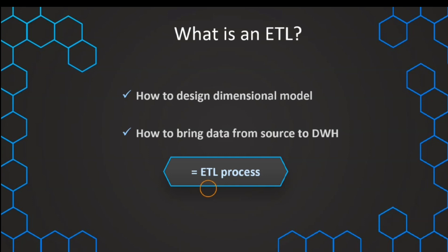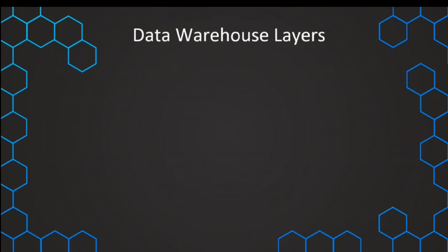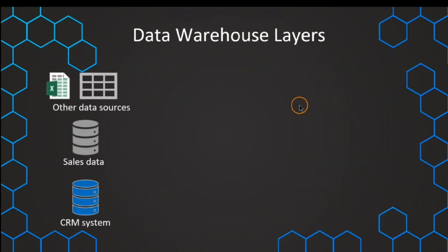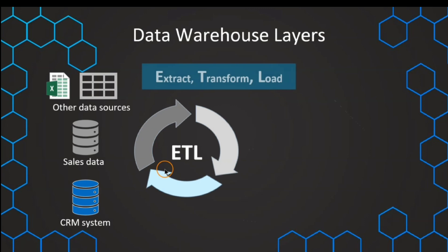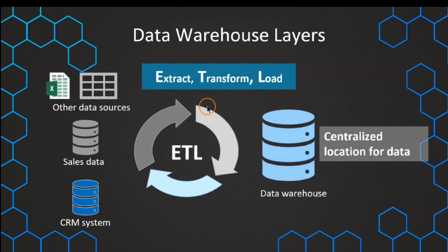Let's quickly revisit what we have already learned about the ETL process. We have learned that there are data sources, and our data for our data warehouse can come from all of these different sources — they need to be integrated, cleaned, transformed, and integrated in our data warehouse. The ETL tool handles this by extracting the data first from the data sources, then transforming it, and finally loading it into our centralized location — our final data warehouse.